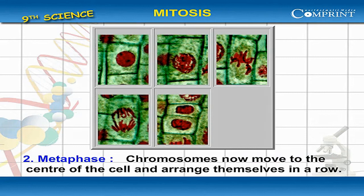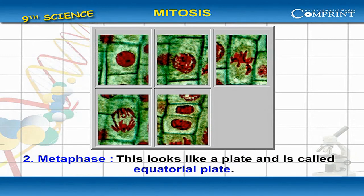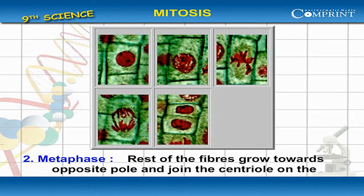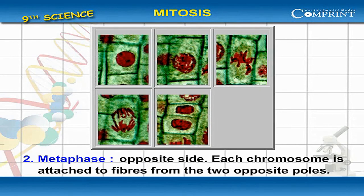Metaphase. Chromosomes now move to the center of the cell and arrange themselves in a row. This looks like a plate and is called the equatorial plate. Some of the spindle fibers are attached to the centromere of each chromosome. The rest of the fibers grow towards the opposite pole and join the centriole on the opposite side.